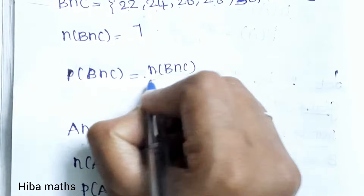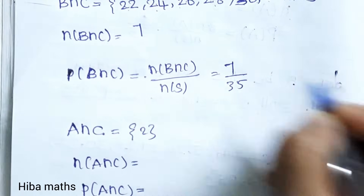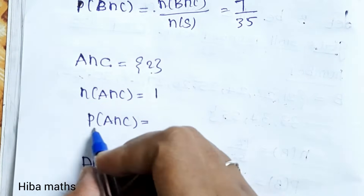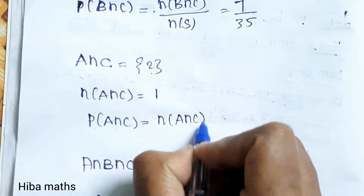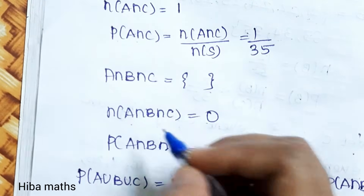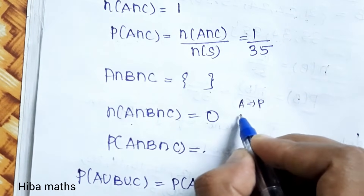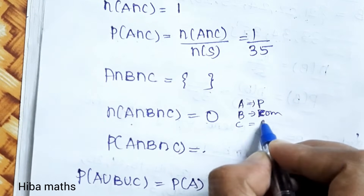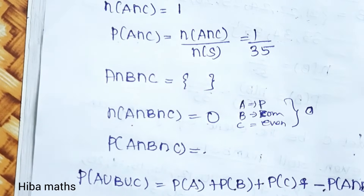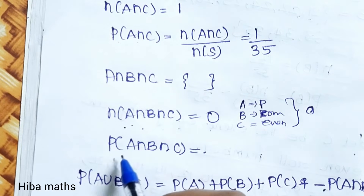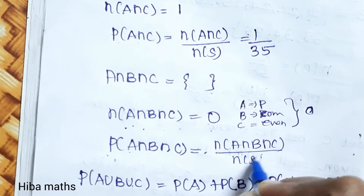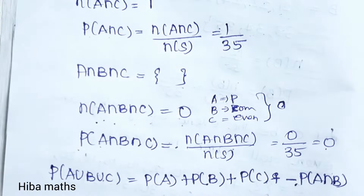For A∩C: prime numbers from 1–20 that are also even — only 2. So n(A∩C) = 1 and P(A∩C) = 1/35. A is prime numbers, B is composite numbers, C is even numbers. A number cannot be both prime and composite, so A∩B∩C = 0, and P(A∩B∩C) = 0/35 = 0.